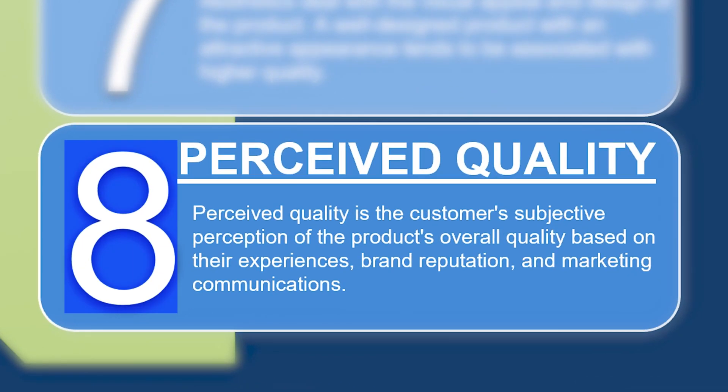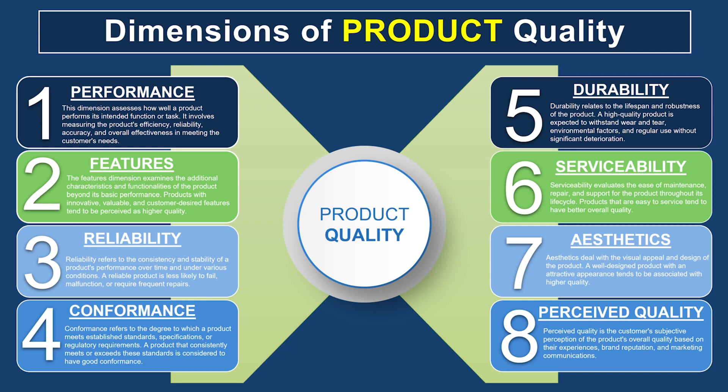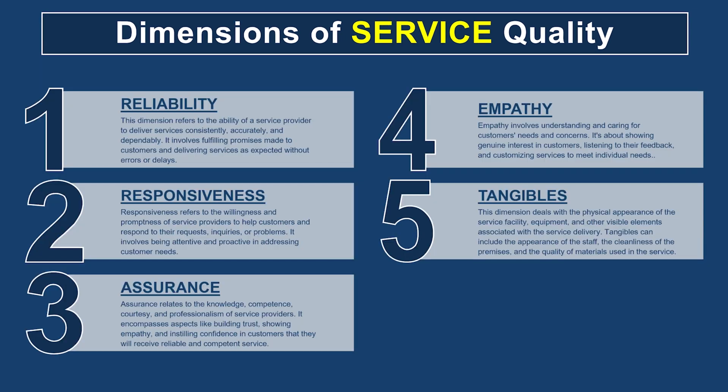Lastly, we have perceived quality — this is image, advertising, and the brand name of the product. We tend to believe certain products have a certain level of quality just based on imagery and advertising. It's perception. We've seen things advertised that make us feel a product will be great, and then it's not — we feel deceived. Perceived quality is an aspect where the customer can sometimes feel misled about a product's actual quality. That covers all eight dimensions for goods and five for services — these are the key dimensions used to evaluate both.